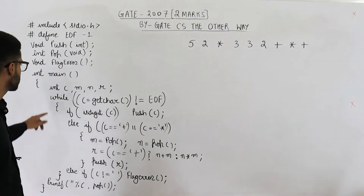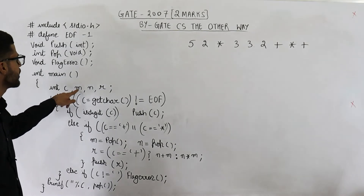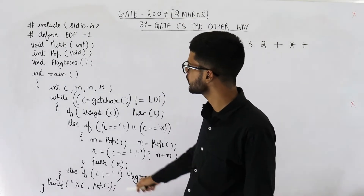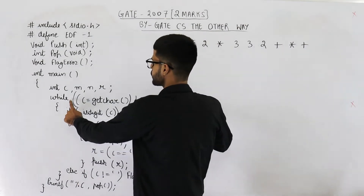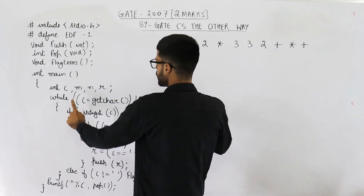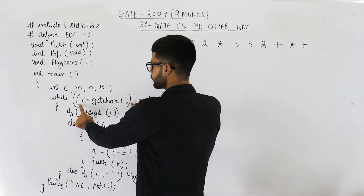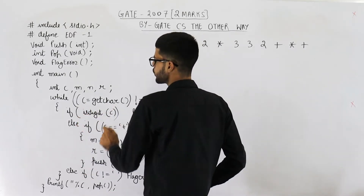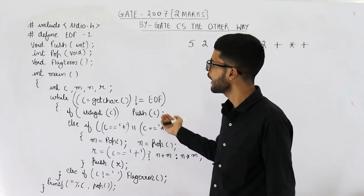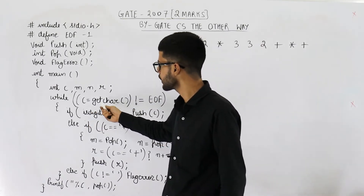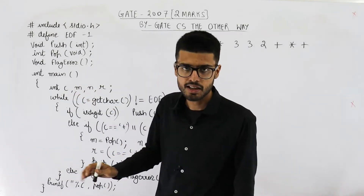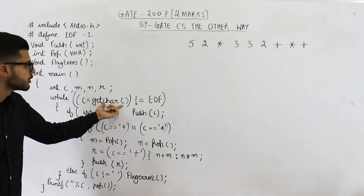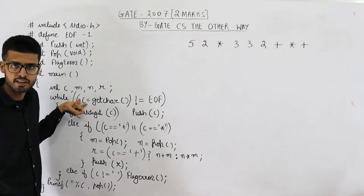The first line in this program is: int c, m, n, r — so you are declaring four integer variables. The next line is a while loop. Inside the condition, first solve the innermost pair of brackets: c = getchar(), meaning get a character and save it in c. Can we save a character in an integer? Yes, because all characters are saved as ASCII values, and an ASCII value is an integer that can be stored in an integer variable.